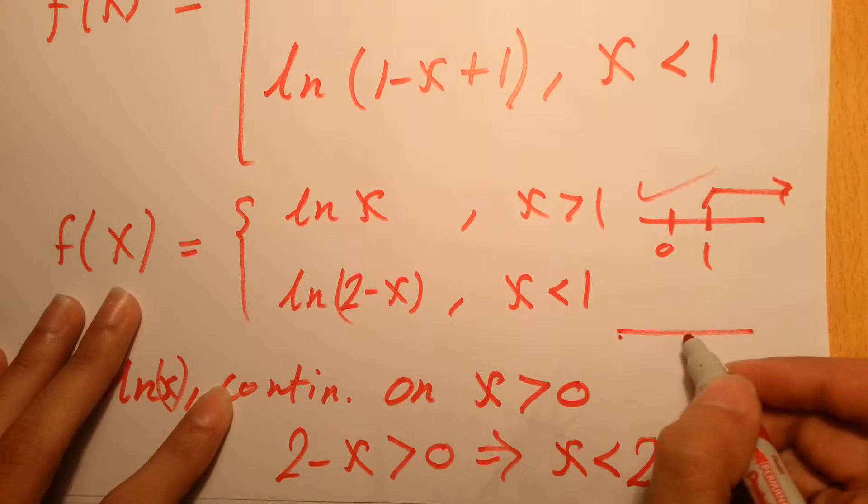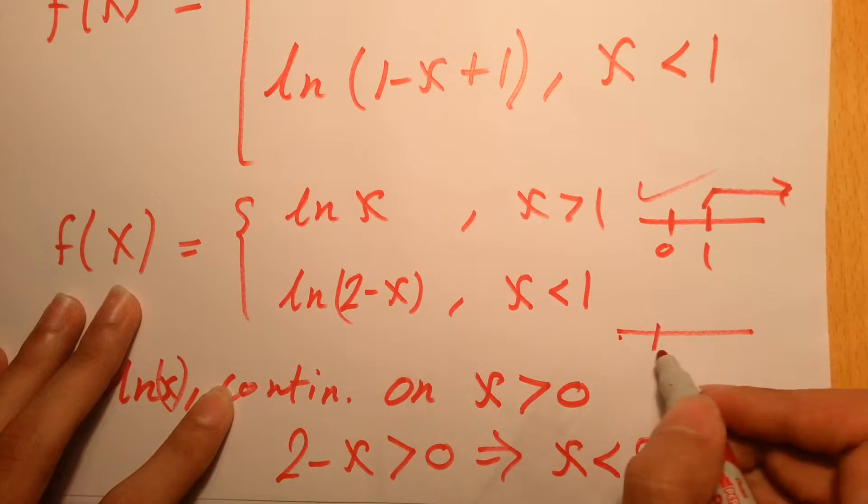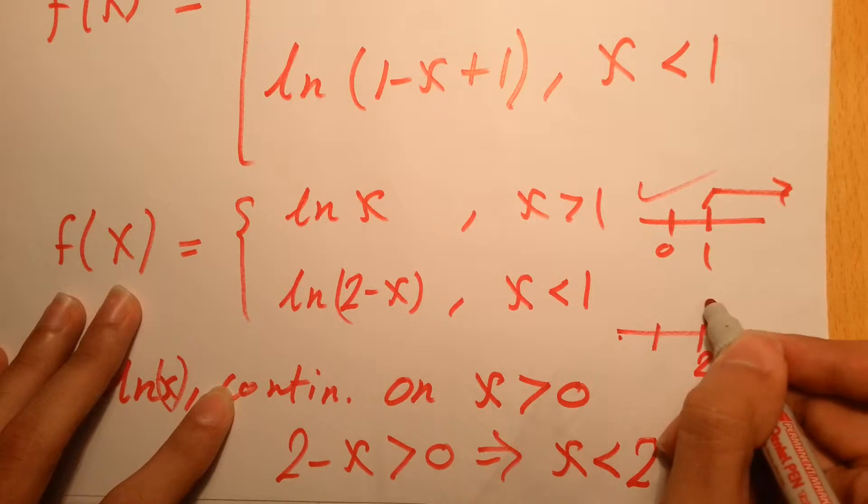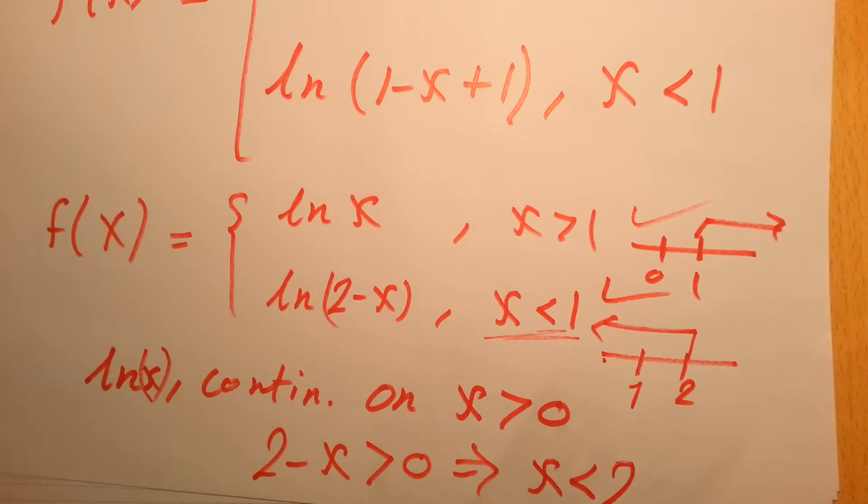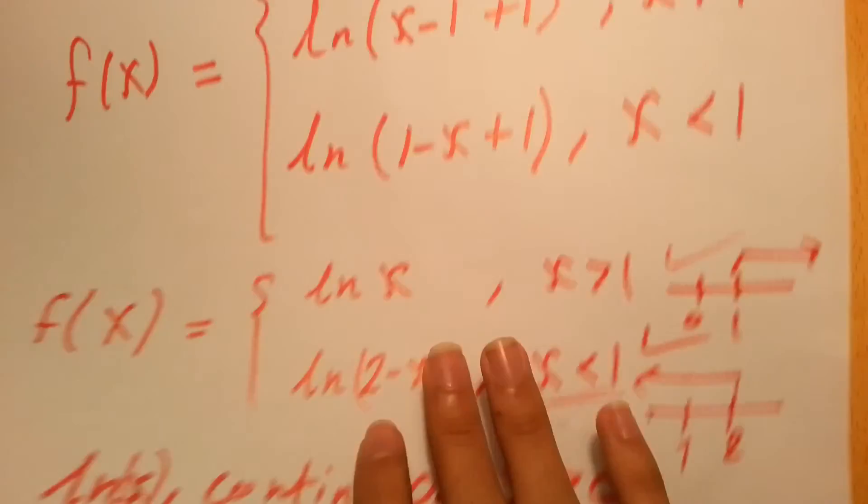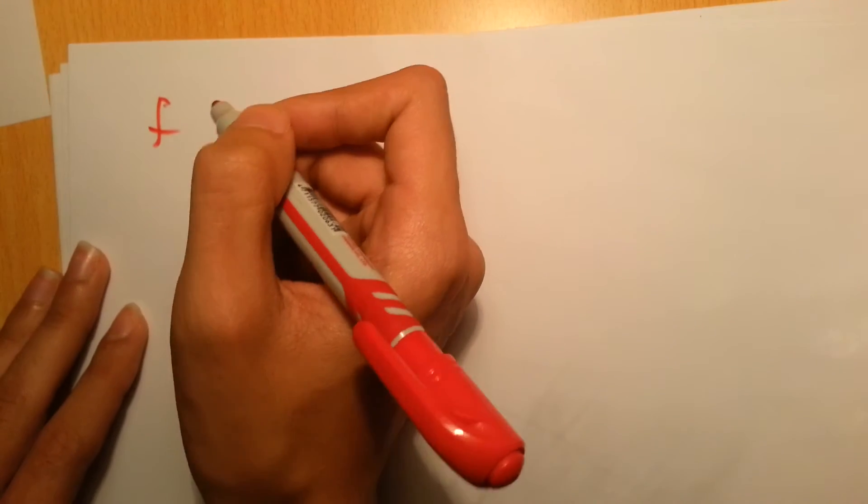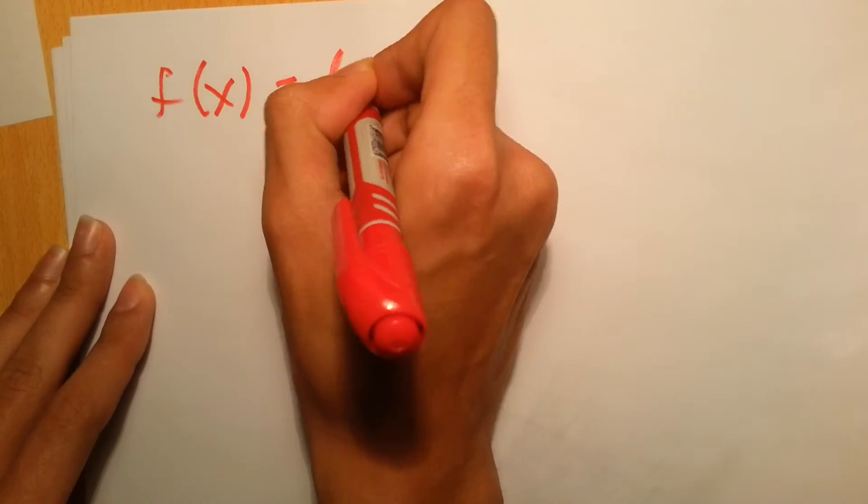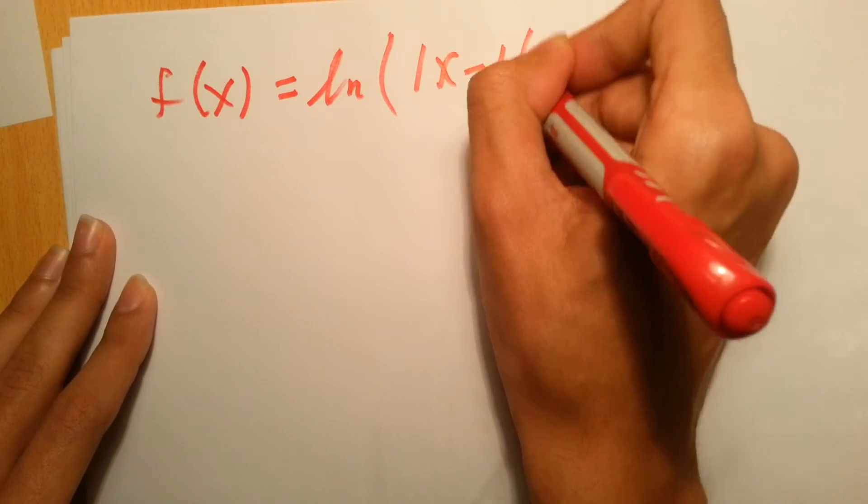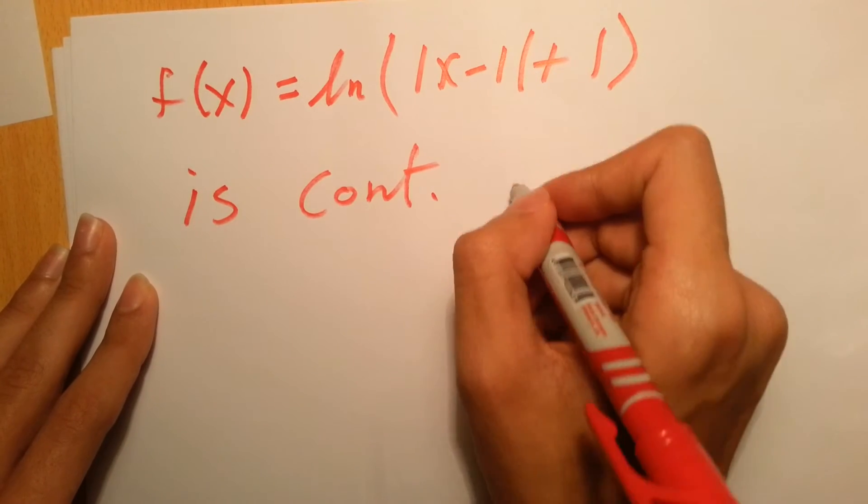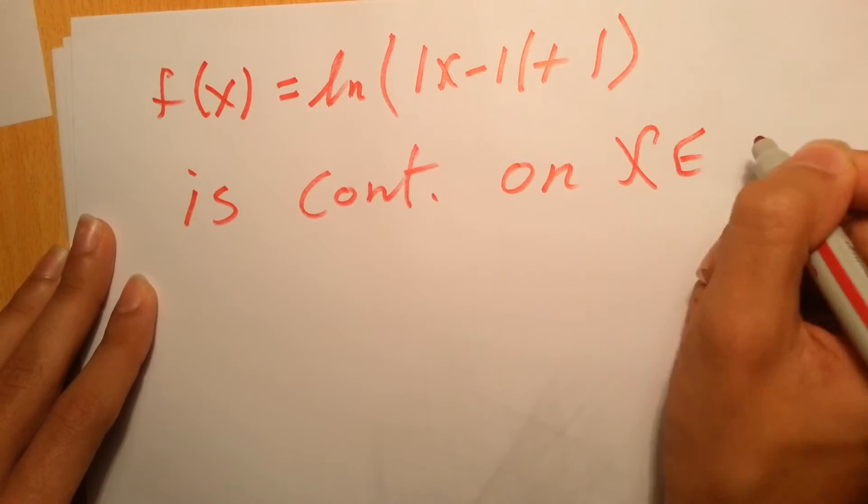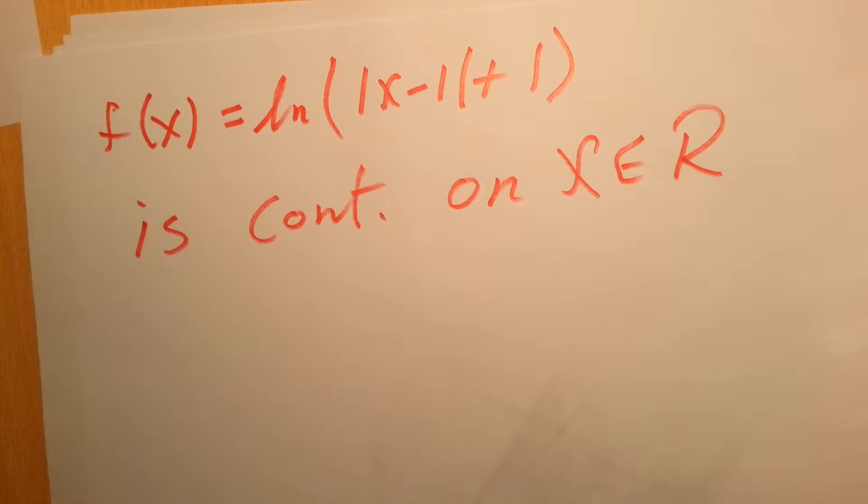For this part, x must be less than 2. But anyway, x is already less than 1, then this part is also continuous. We can conclude that this function, which was originally f of x equals ln of the absolute value of x minus 1, is continuous on R, so it's continuous on all the values. This is for the first part of your question.